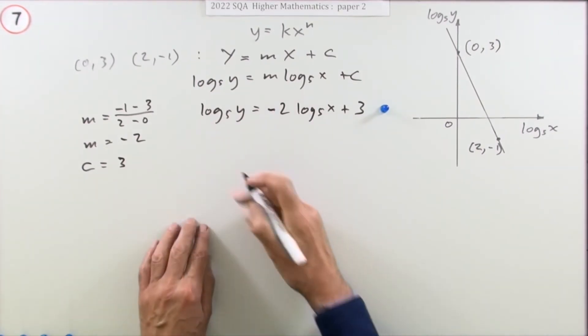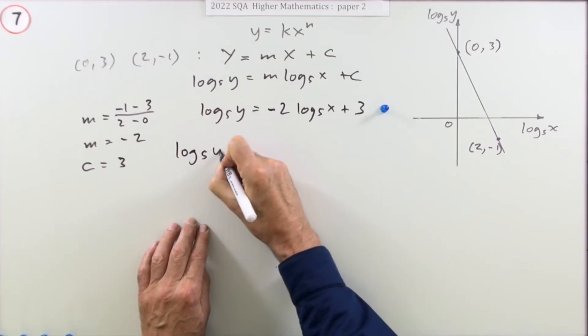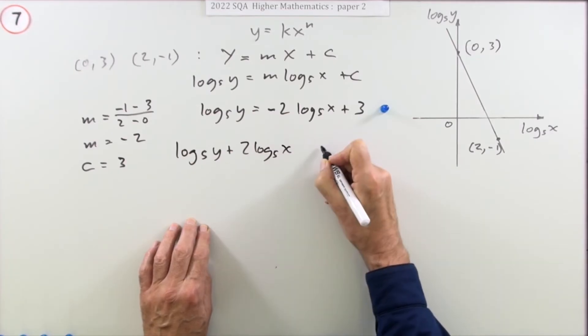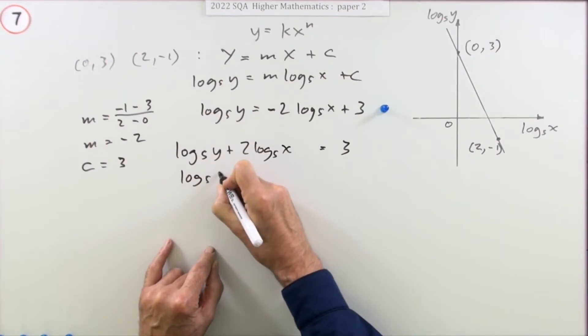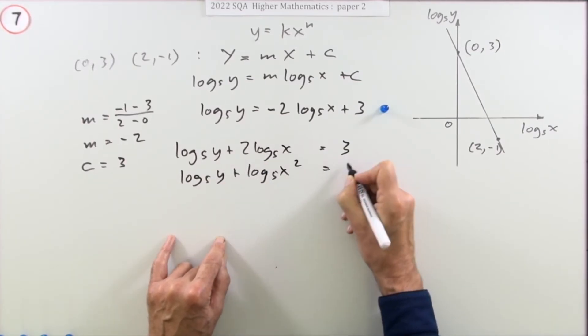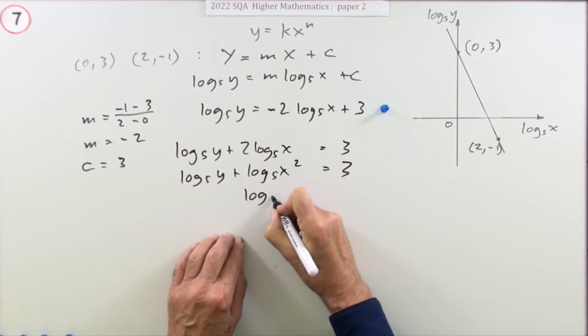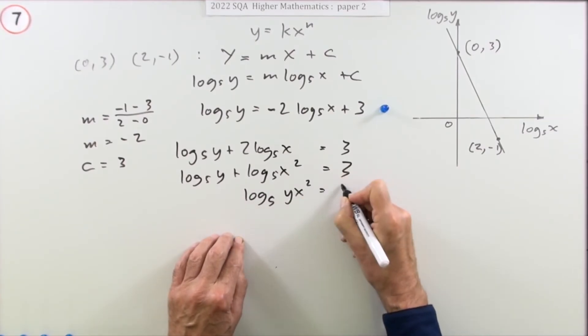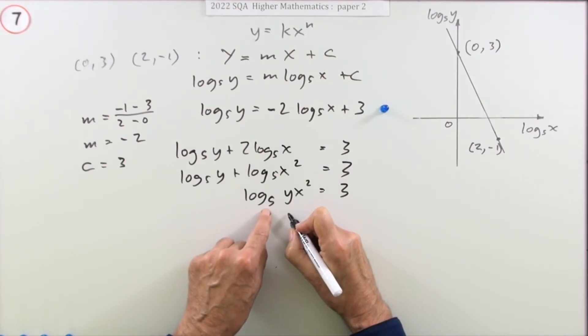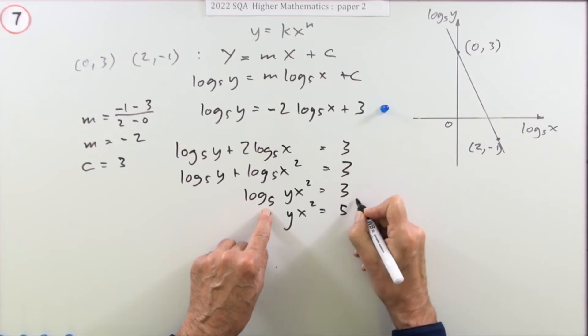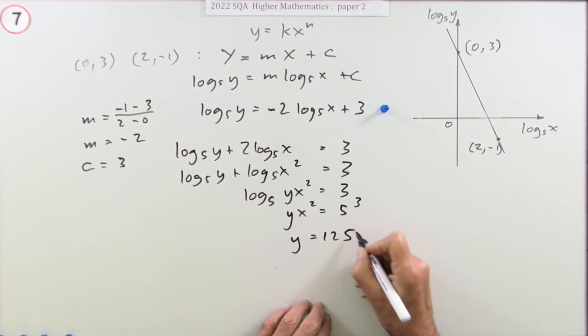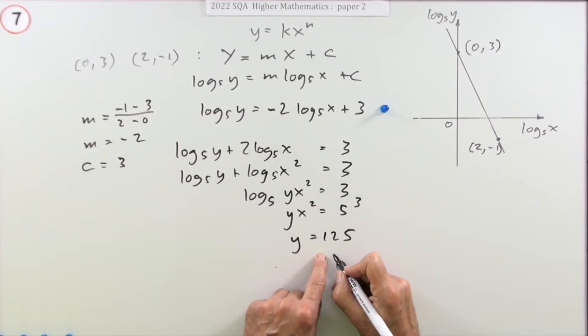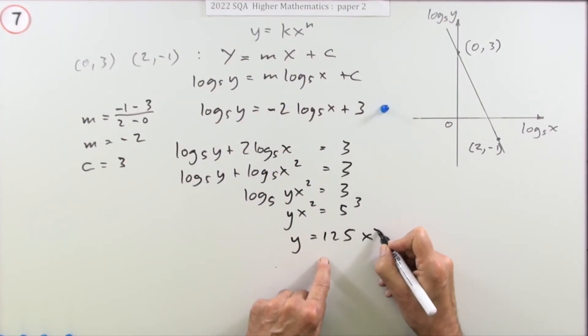So one way would be bring that over here. So log 5 of y plus 2 log 5 of x would equal 3. To get them to join, I need that 2 out of the way, so you've got these bare logs to add together. Log 5 of y plus log 5 of x squared equals 3. Now you can add them. Log 5 of yx² equals 3. And then finally get rid of that. Log yx² is 5 to the power 3. And then finally, y equals, bring that across and divide, so that goes to 125. Then you can either write over x squared or if you want it in that form, make that x to the -2.